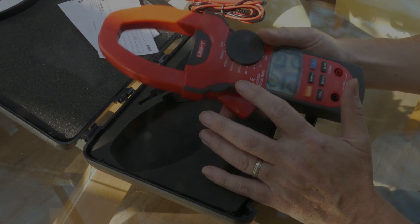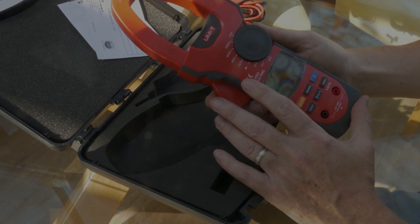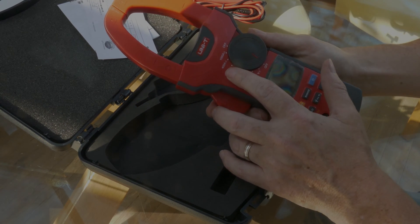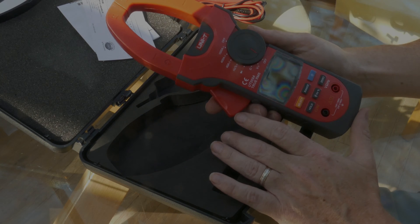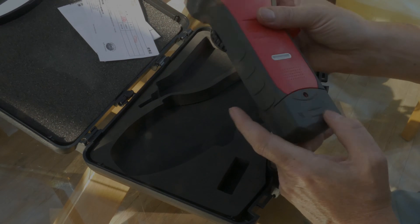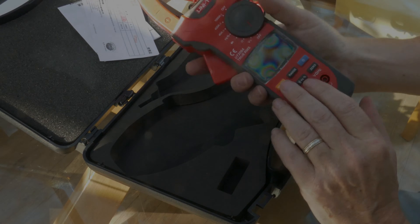On the amps, you've got to select the range, but it is auto sensing between AC and DC, and you get a 40 amp, 400 amp, and 1,000 amp range. Like most multimeters, it feeds off of a 9-volt battery.